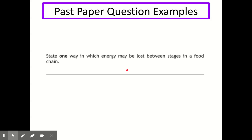Past paper question one asks: state one way in which energy may be lost between stages in a food chain. There are three possible answers: heat, movement, or undigested material.